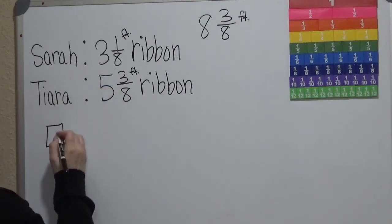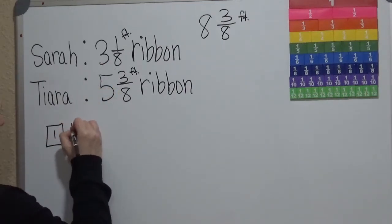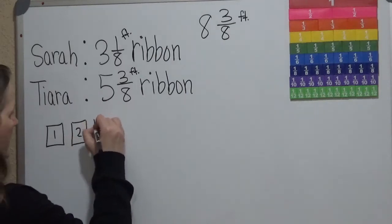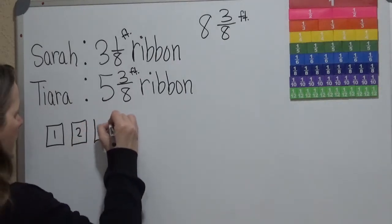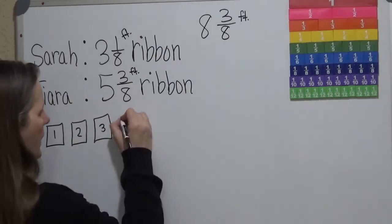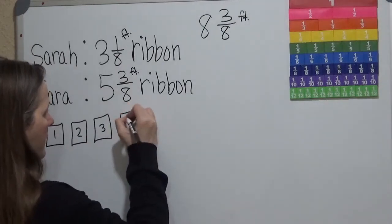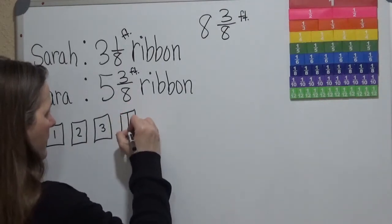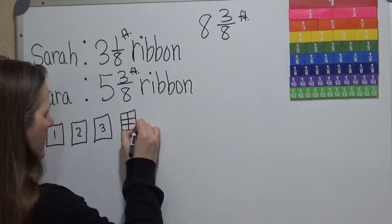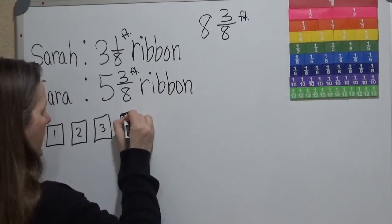So Sarah has 1 whole, 2, 3 wholes, and then she has 1 out of 8. So she has 1 out of 8.